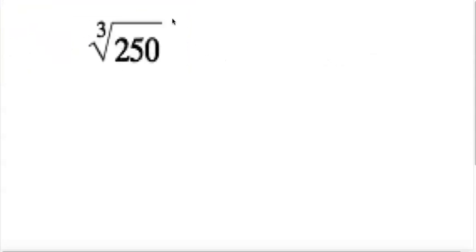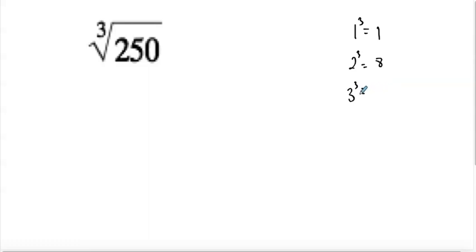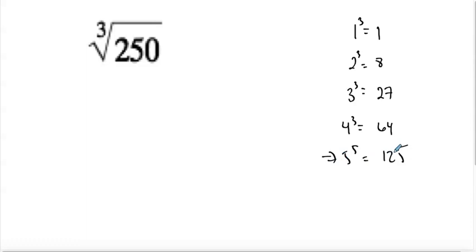So we have the cube root of 250. Square roots I know a good amount of them off the top of my head. Cube roots I know a few, not as many. But just think about it — what is one cubed? 1. 2 cubed? 8, right? 2 times 2 times 2. 3 cubed: 3 times 3 is 9, 9 times 3 is 27. 4 cubed: 4 times 4 is 16, 16 times 4 is 64. 5 cubed is 125, and I'm going to stop here — ding ding ding — so 125 looks like it goes in there nice and evenly.